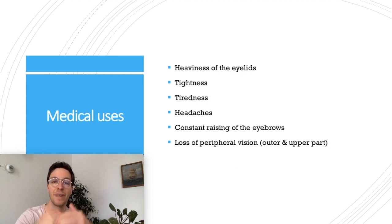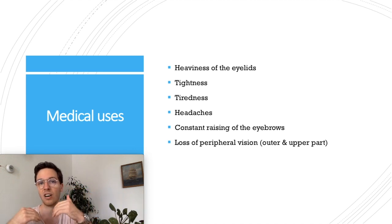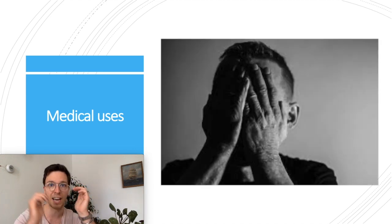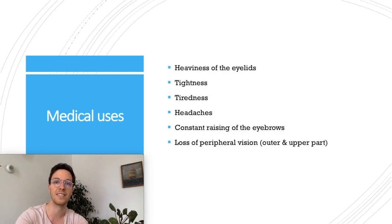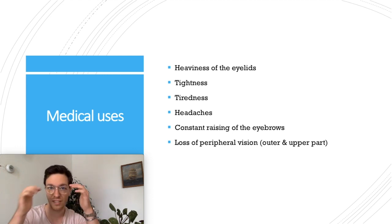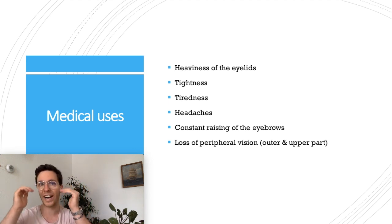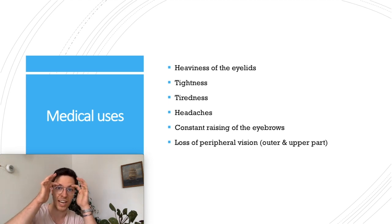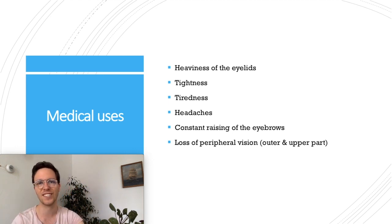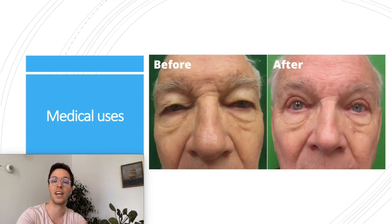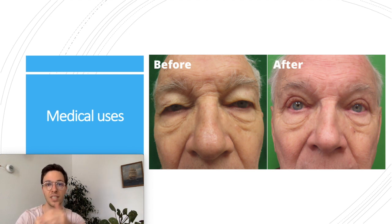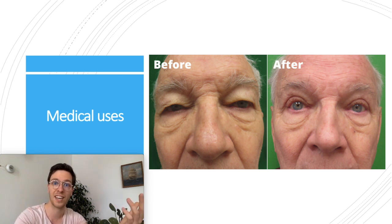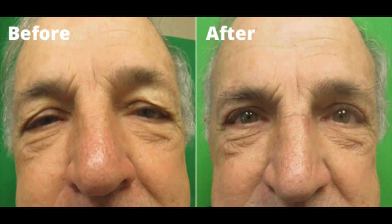In medical uses, the sagging of the upper eyelid can cause some complaints — mostly heaviness of the eyelids as well as tightness, tiredness mostly during the evening, as well as unexplained headaches. This can partially be explained by the constant raising of the eyebrows, because when the upper eyelid is sagging you try to compensate by raising your eyebrows, and this causes part of the symptoms. Also, you will have a loss of peripheral vision because your upper eyelid is sagging and will cover part of your pupil, mostly on the outer and upper sides, leading to a loss of peripheral vision.